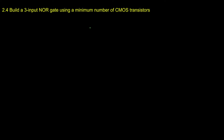Here we are looking at the NOR gate, so for a 3-input gate we put 3 PMOS in series and 3 NMOS in parallel. If they ask for 4 inputs you put 4 PMOS in series and 4 NMOS in parallel. Based on the number they ask for, you put that many PMOS and NMOS. Here it's 3 inputs, so let's go ahead and design the circuit.